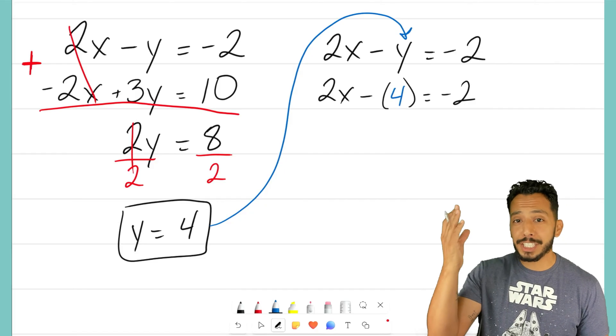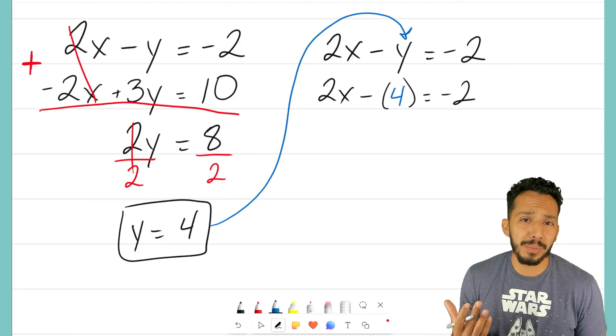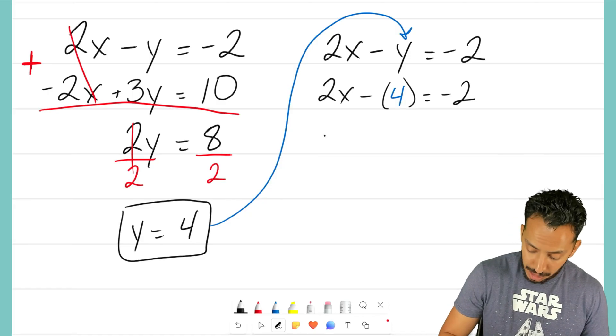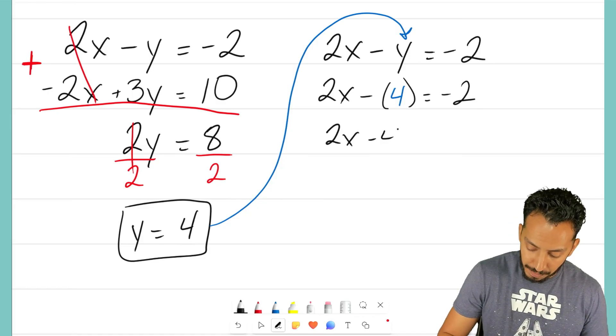Now, it doesn't matter. I chose the top one. You could have chose the bottom one, but I need to now use this equation to help me solve for x. So, we have 2x. It's just a minus 4. Nothing really special is happening there.